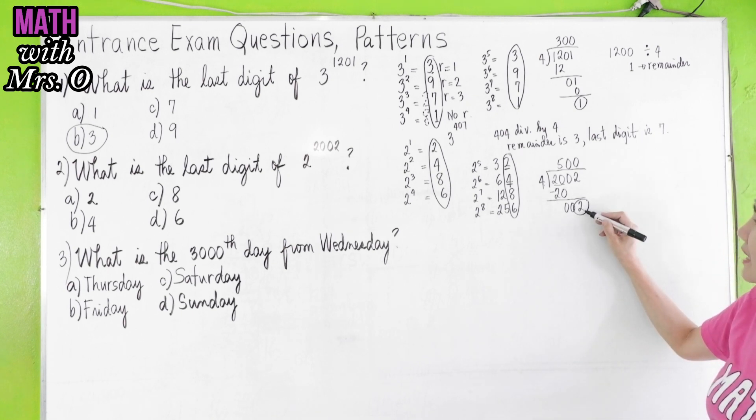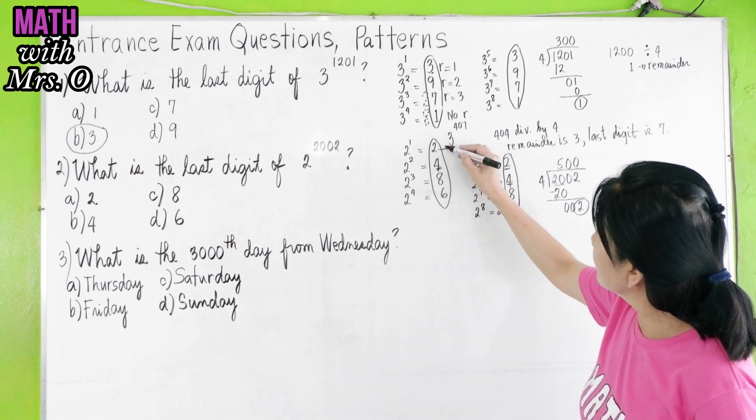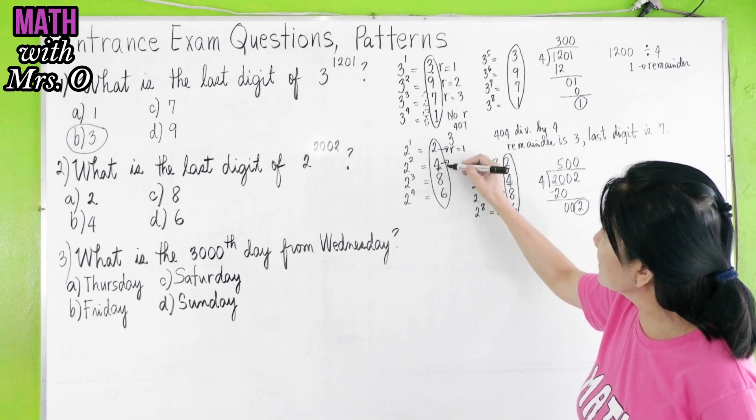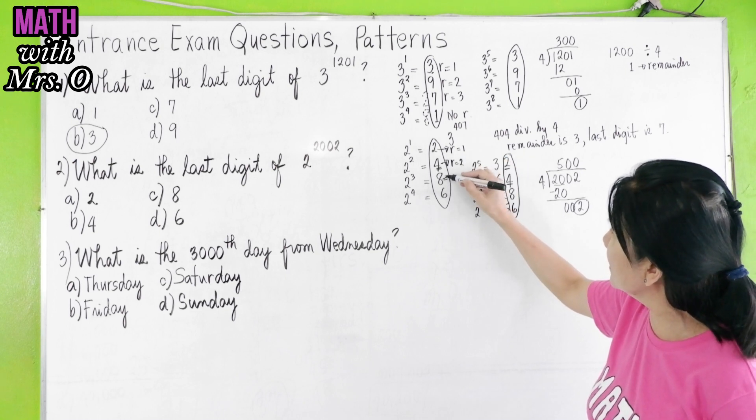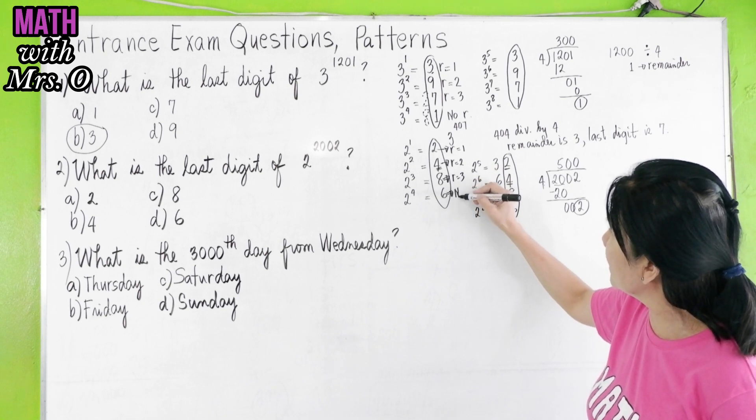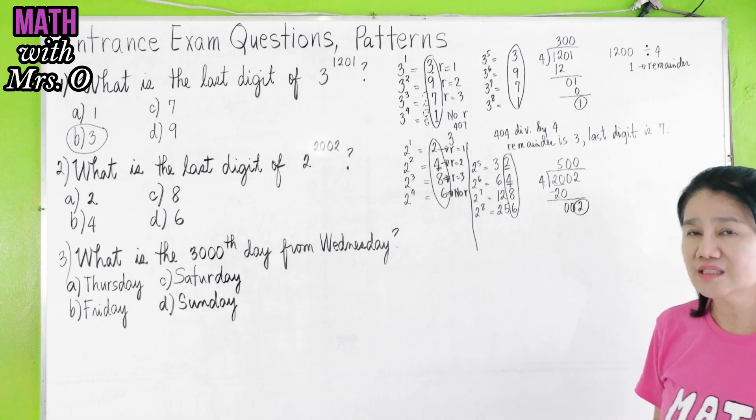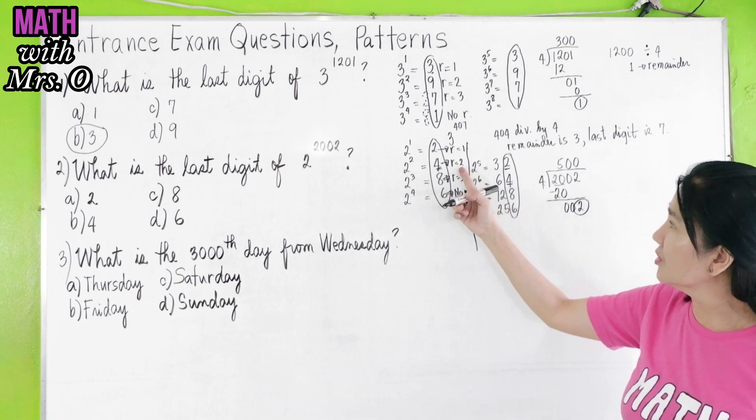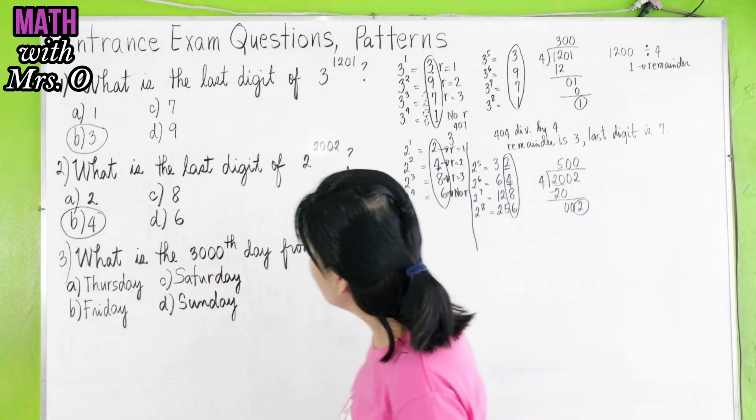If you have a remainder of 2, that would mean your last digit will be 4. Your last digit is 2 if the remainder is 1. Your last digit is 4 if the remainder is 2. Your last digit is 8 if your remainder is 3. And if there's no remainder, your last digit will be 6. In this case, your remainder is 2, so your last digit will be 4.